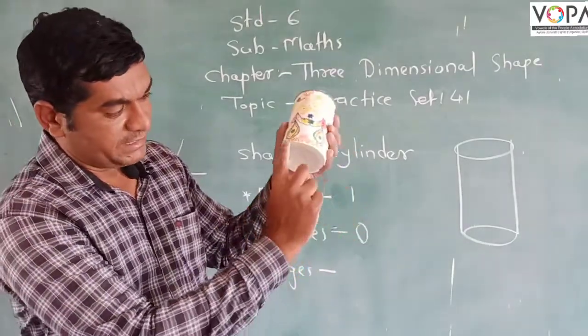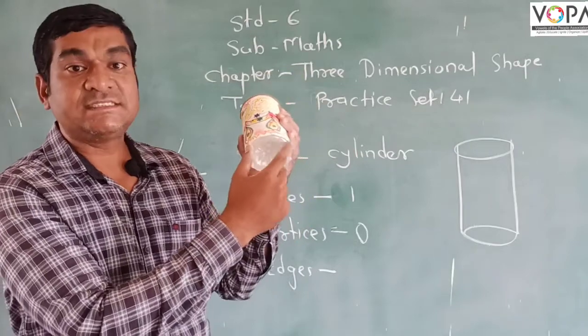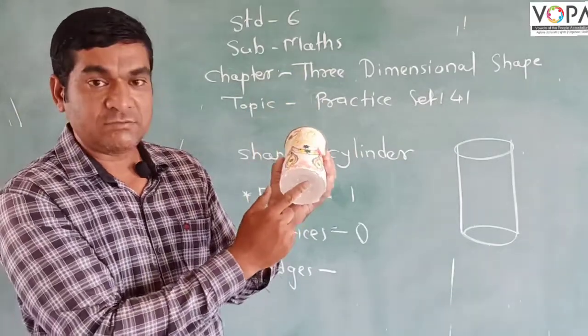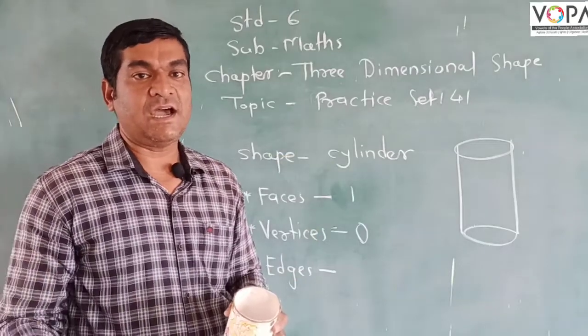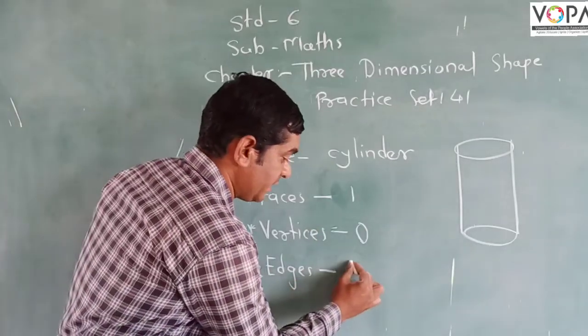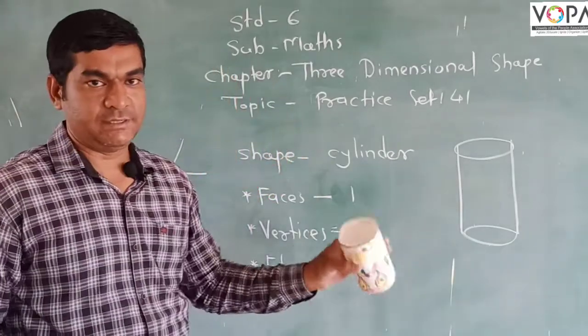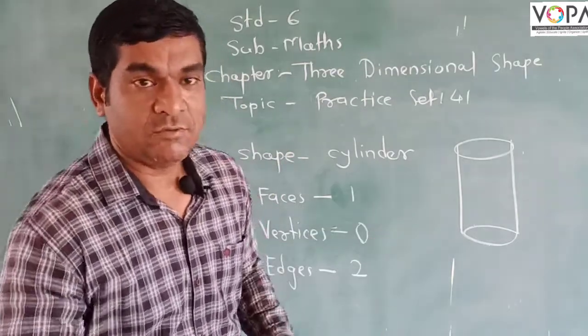And where are the edges? See, this is one edge. This is a circular edge. So this is one and this is another. So the number of edges are 2. They are cylindrical or circular in shape. So we get the answer.